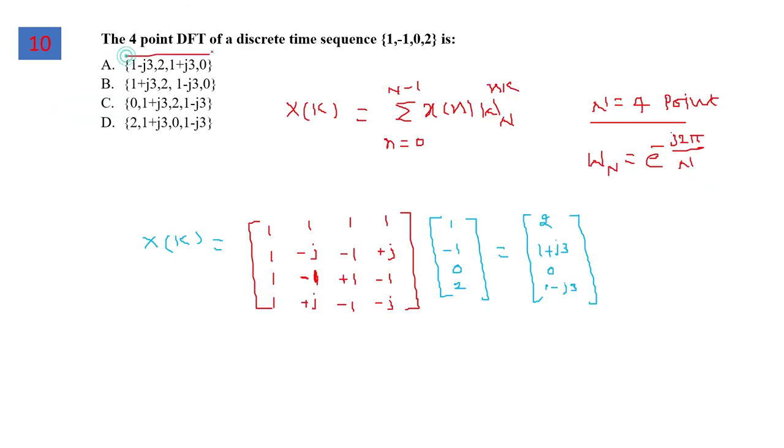Question number 10: The 4-point DFT is to be obtained for the discrete time sequence {1, -1, 0, 2}. This was asked in a previous examination with a different approach. Now we're using a matrix formula. Since N equals 4, we can directly solve using the matrix formula. The DFT relation uses the twiddle factor W_N^k, which is e^(-j2π/N) where N equals 4.